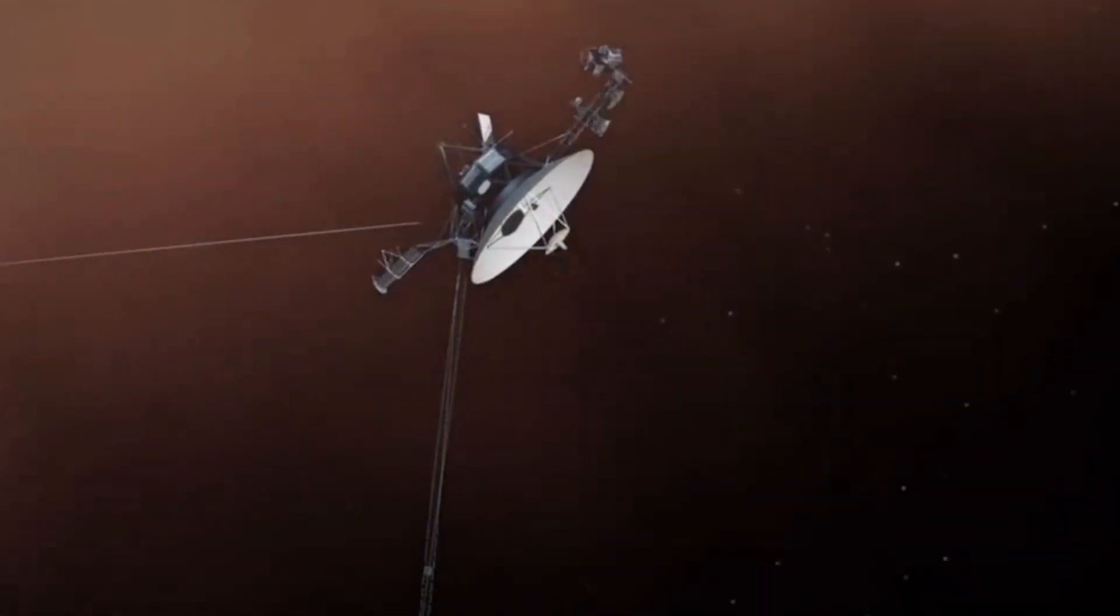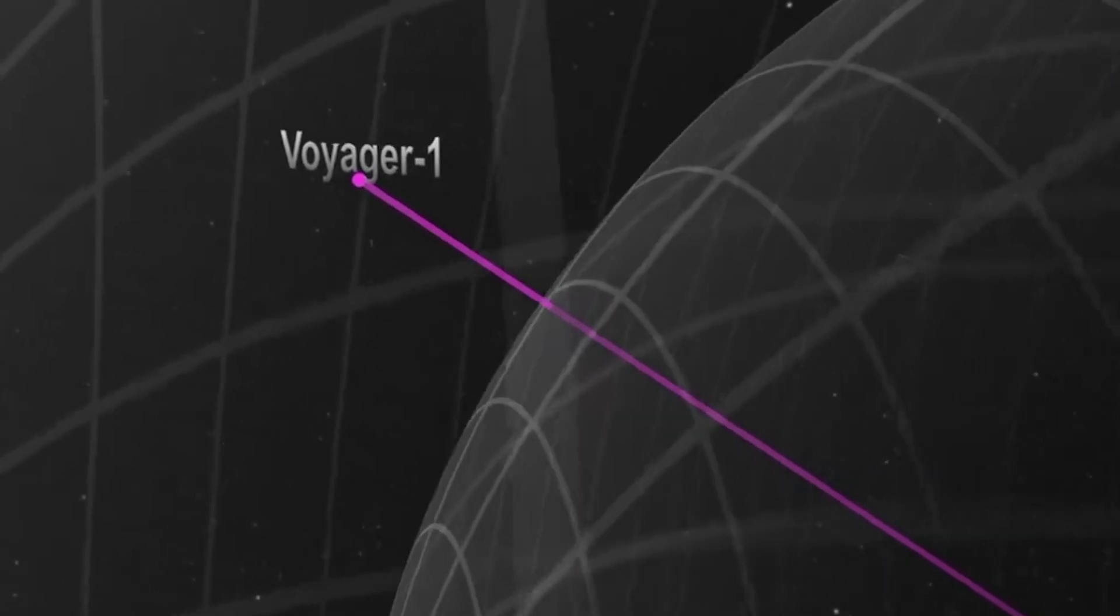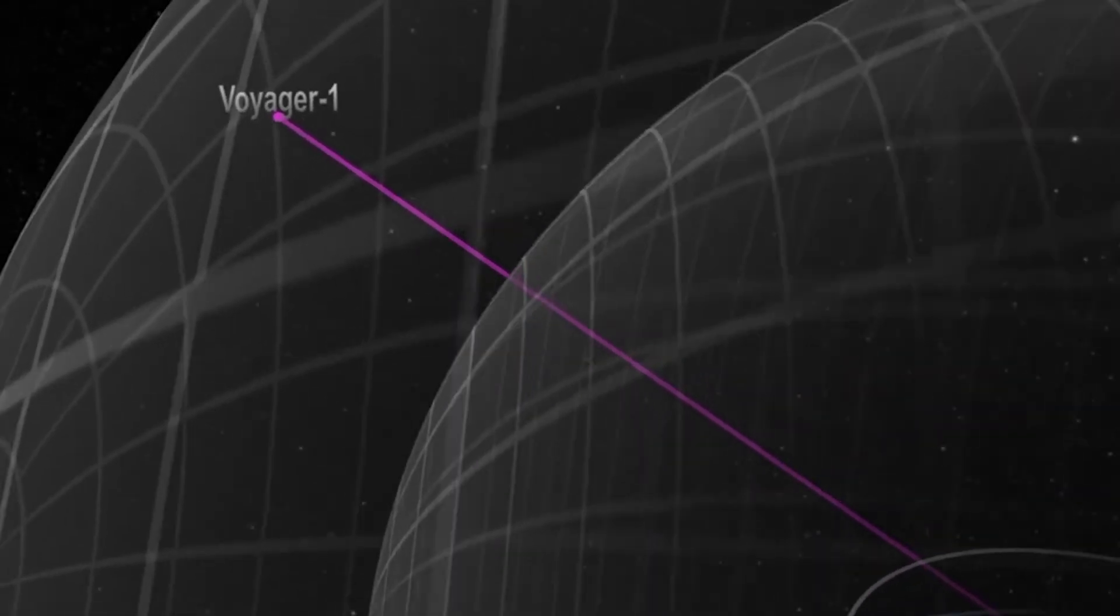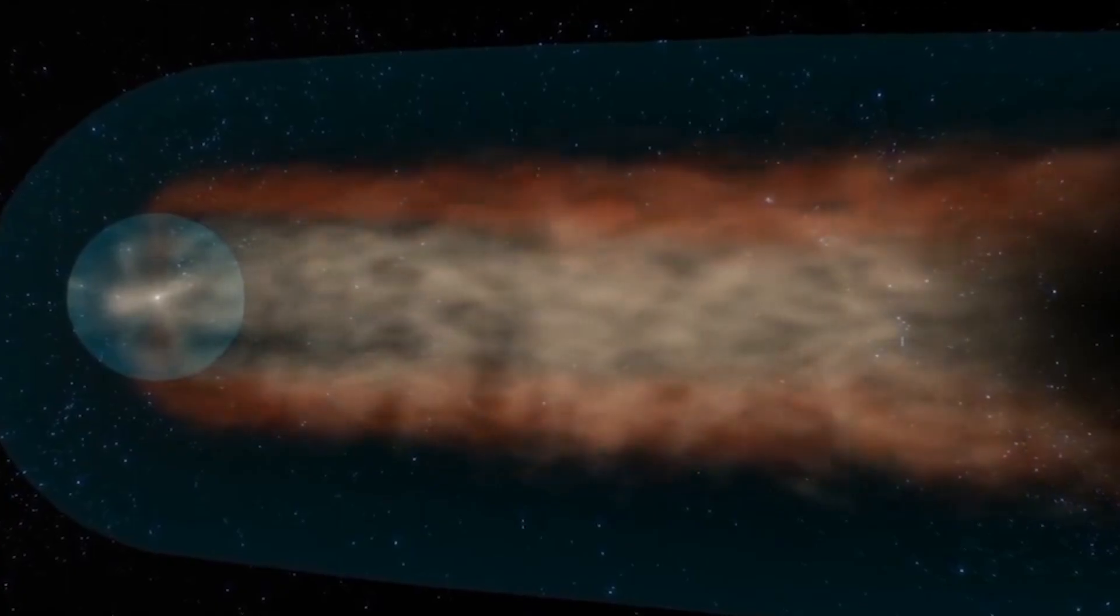According to official records, the Voyager interstellar mission began in January 1990. But it wasn't until August 2012 that Voyager 1 crossed the border of our solar system into interstellar space. The incredibly long journey to reaching that milestone was filled with many iconic moments.